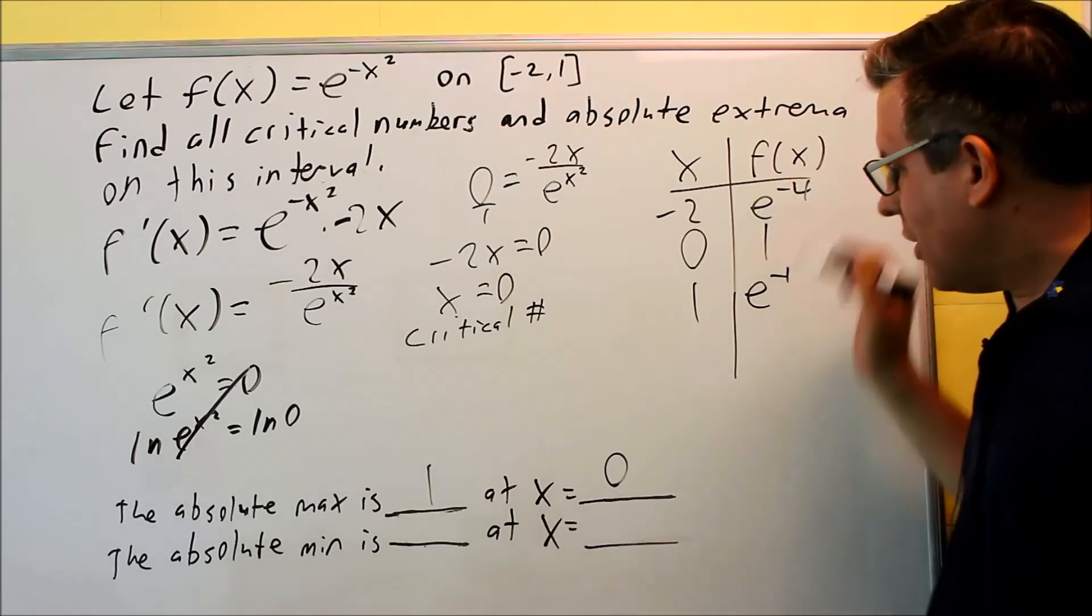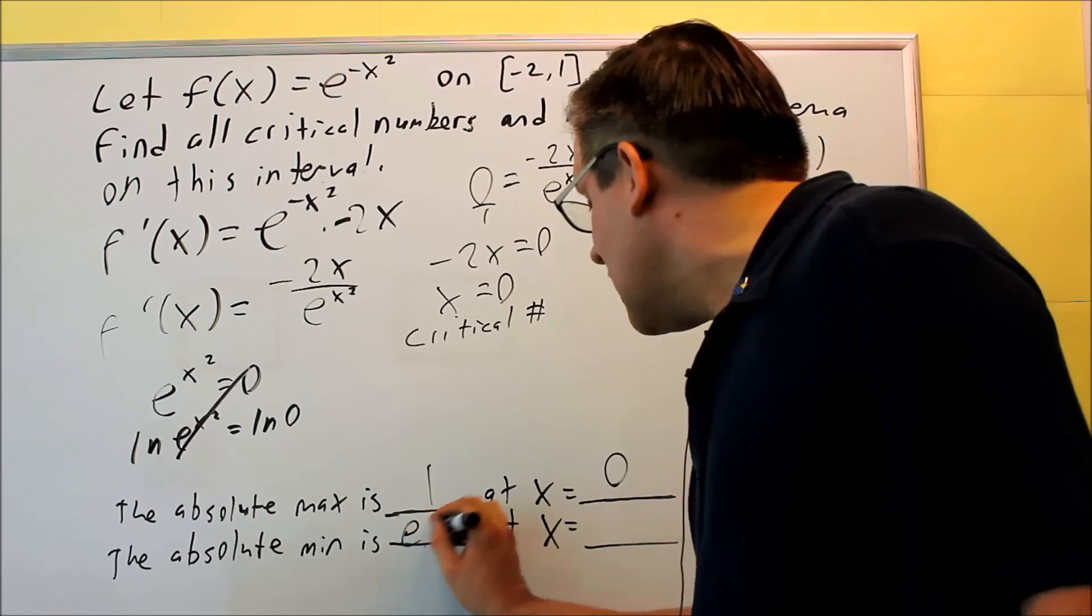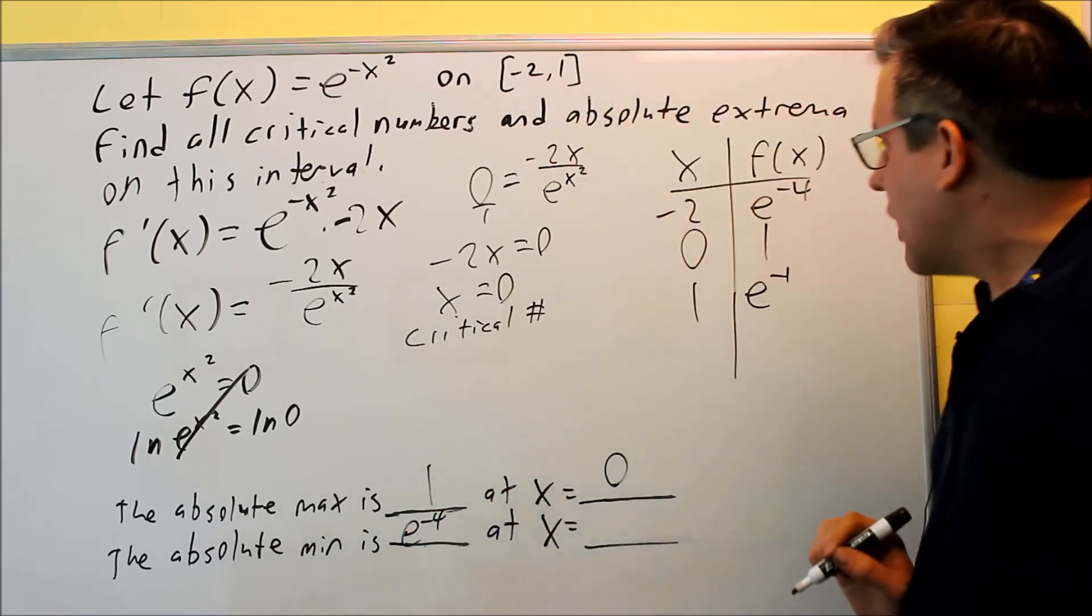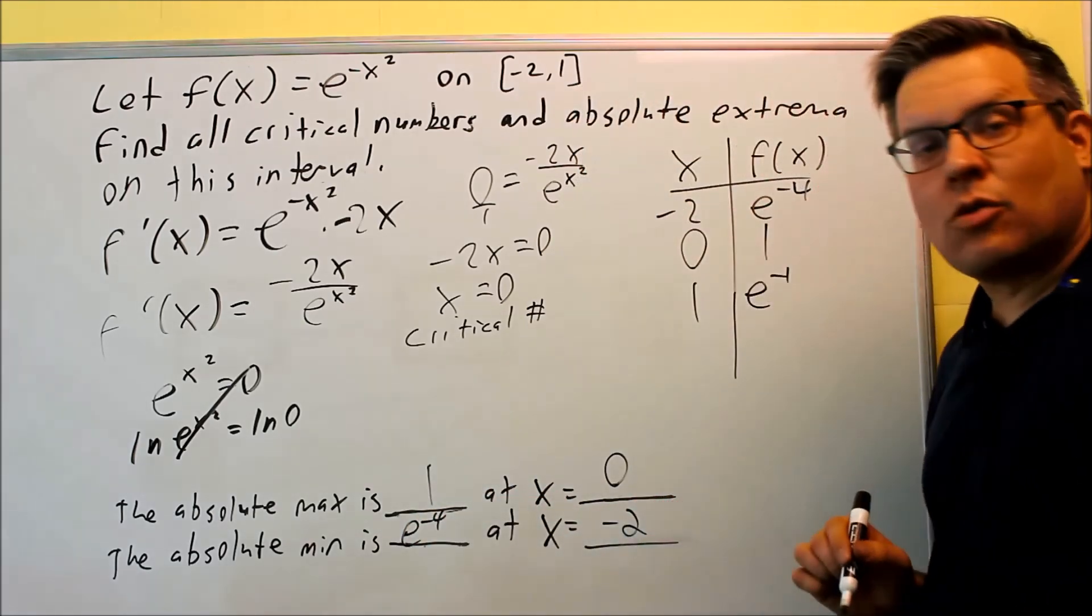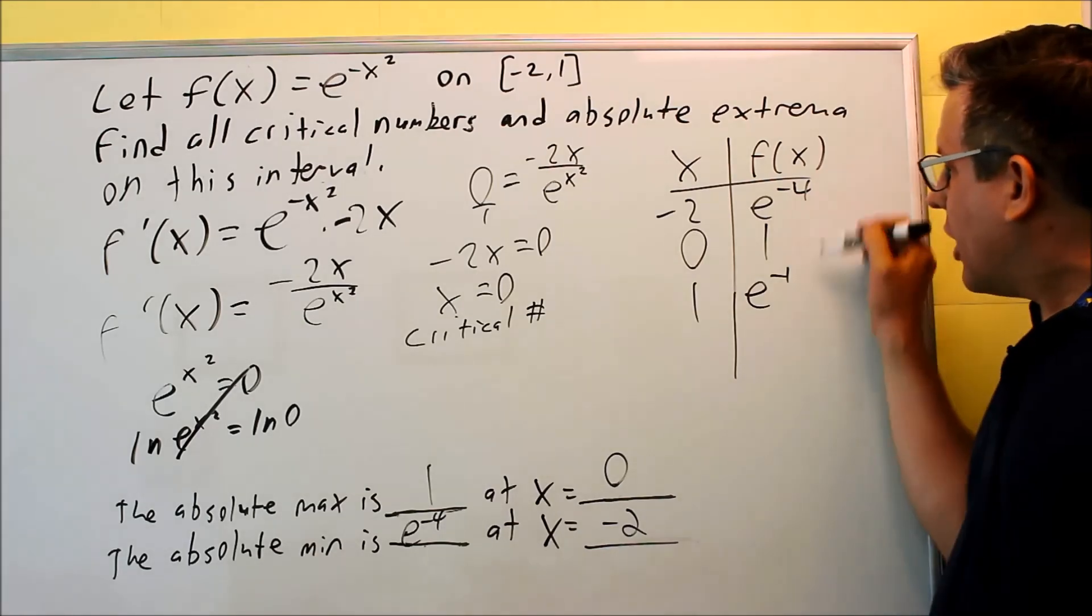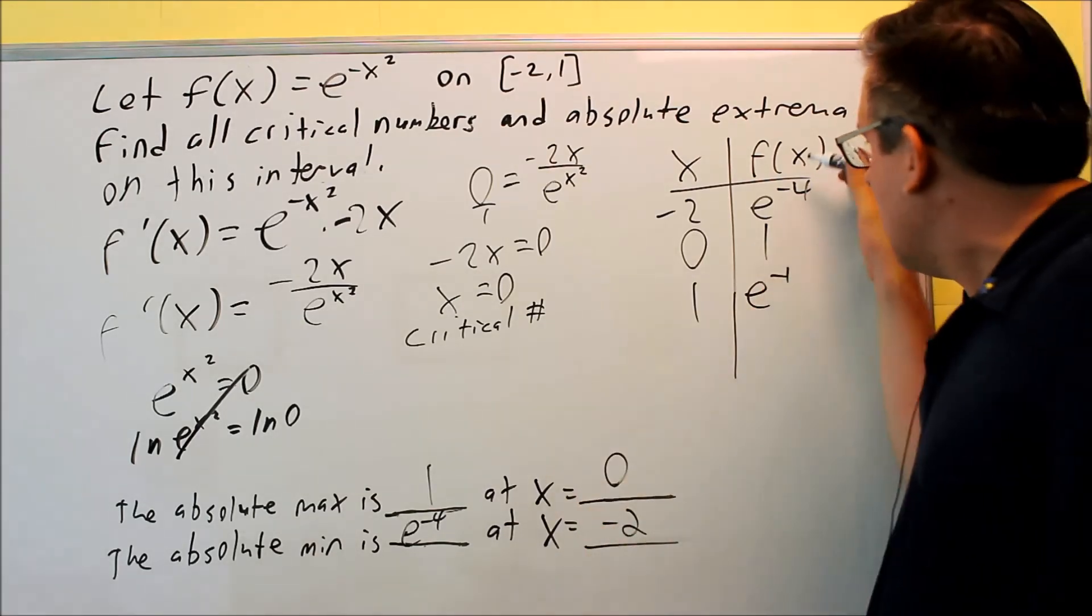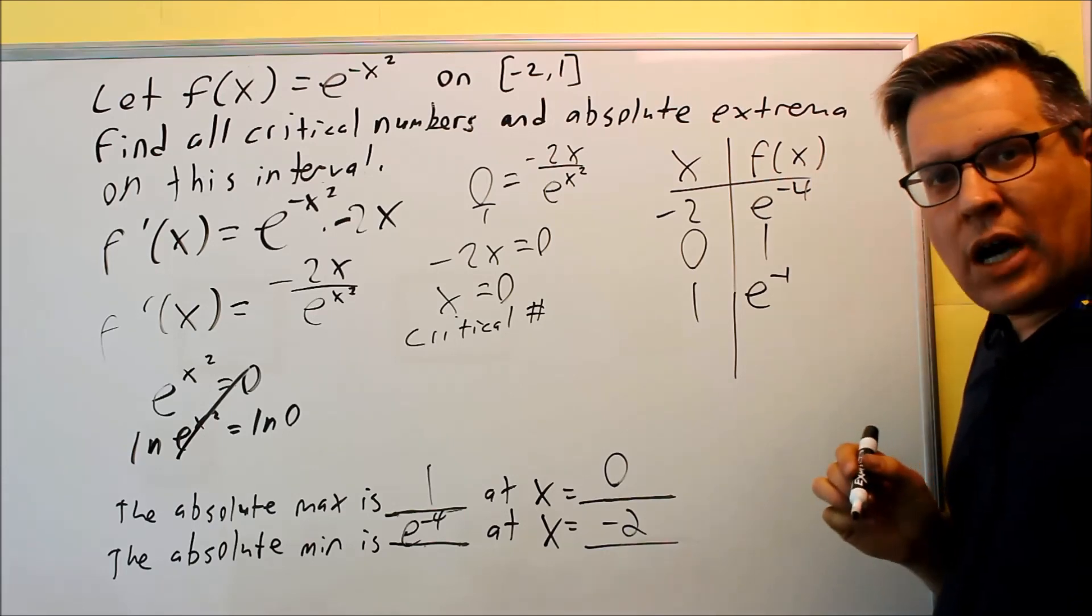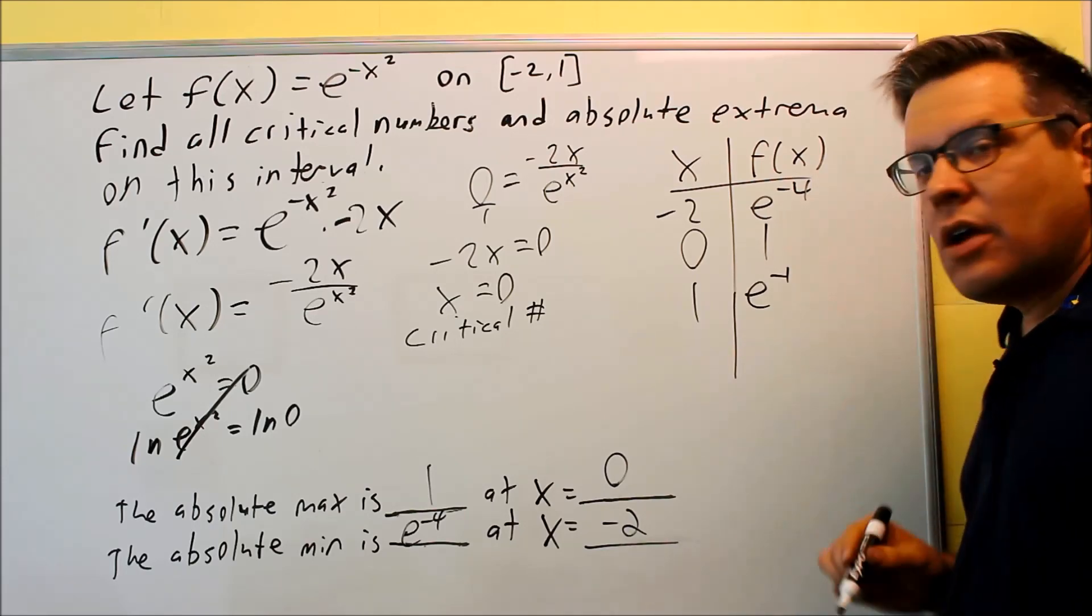So the absolute min is e to negative 4, and that's going to occur at x is equal to negative 2. So again, if you don't like comparing the actual values, you could also use decimals, but this one is actually possible that you can compare it using the exact values.